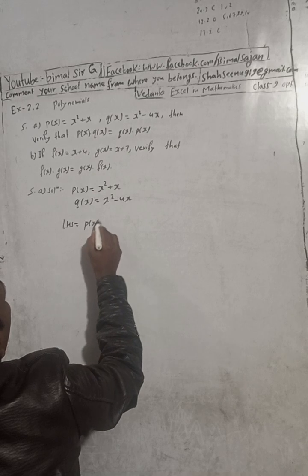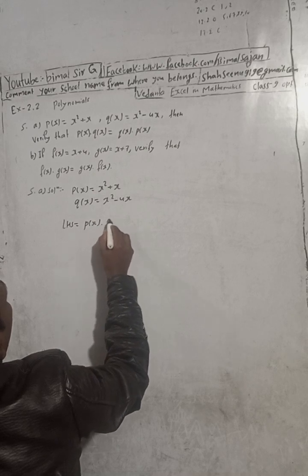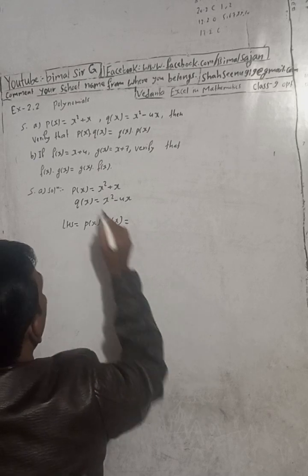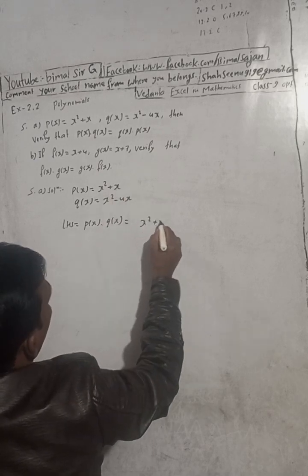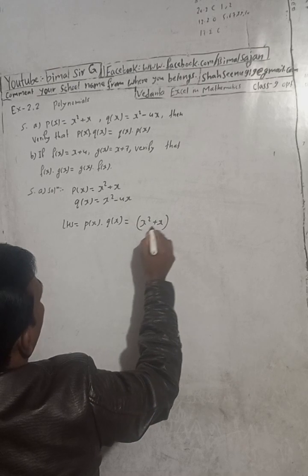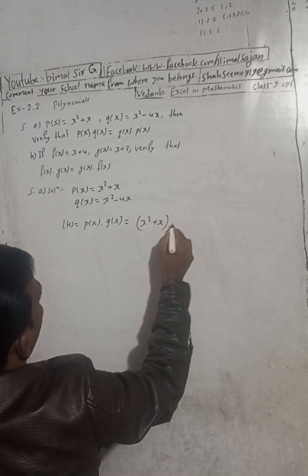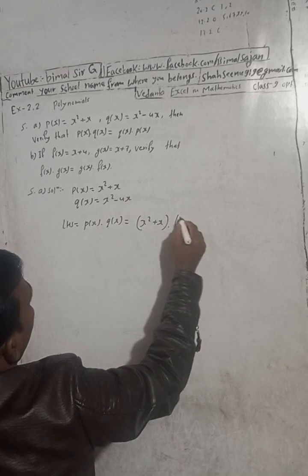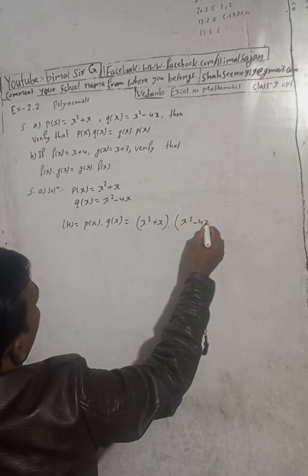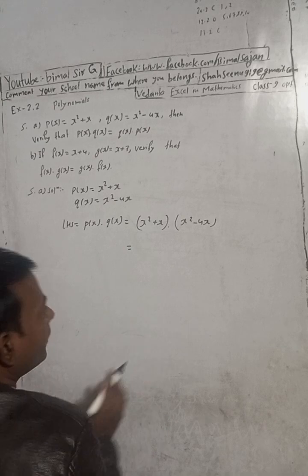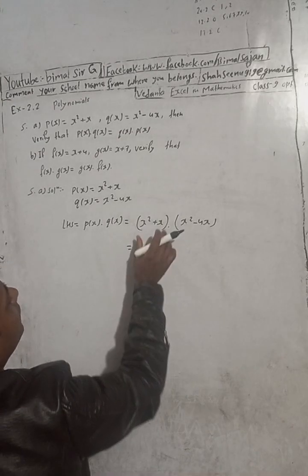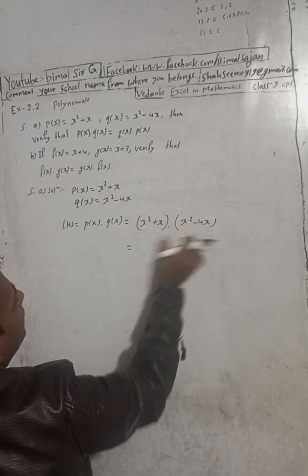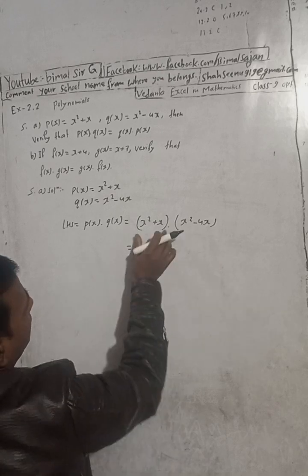LHS is equal to P(x) into Q(x). So P(x) means x² + x, and Q(x) is x² - 4x. It is your choice whether you write these two times or the other way. First I will write these two times.